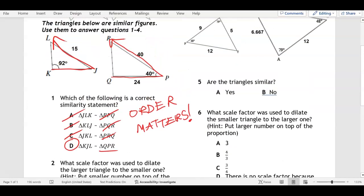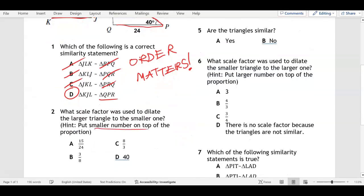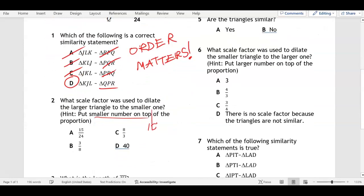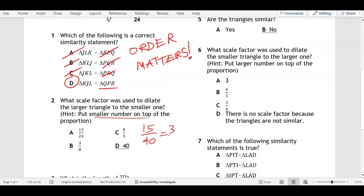Number two: what scale factor was used to dilate the larger to the smaller? Let's put the smaller number on top of the proportion. We're gonna take one connection, 40 and 15. Then we're gonna put the smaller number on top, so that's gonna be 15 over 40. We can use our calculator.